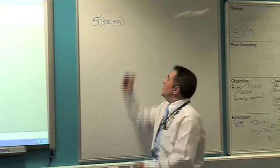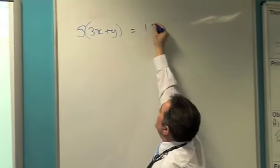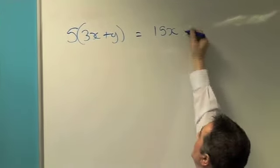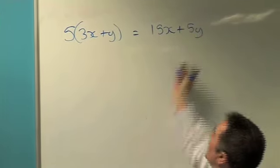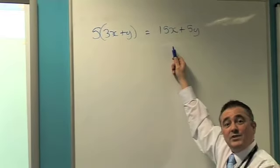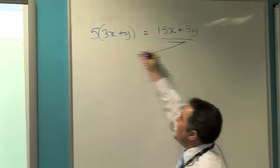If I expand that out, 5 times my 3x will give me 15x, 5 times my positive y will give me a positive 5y. Now I've multiplied up my brackets, but factorising is the opposite. You're given that and you need to put it in that form.